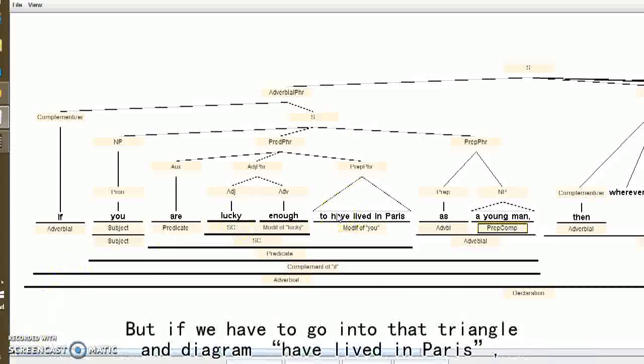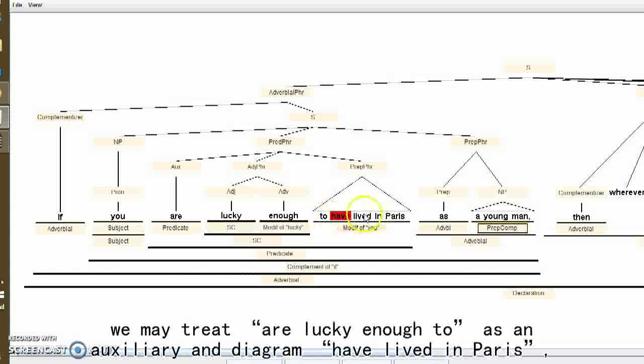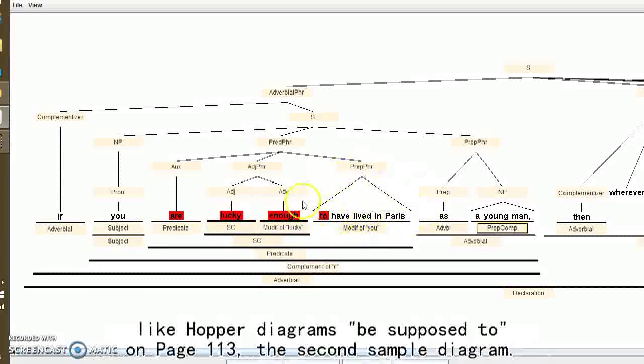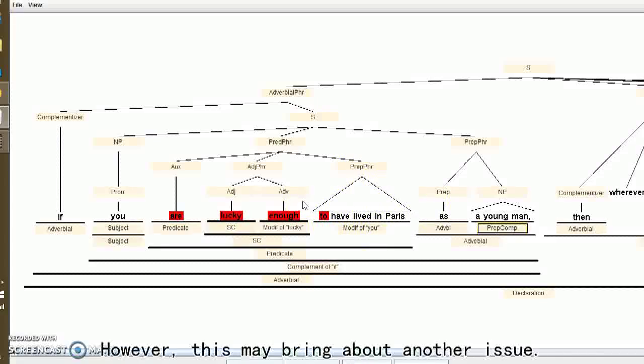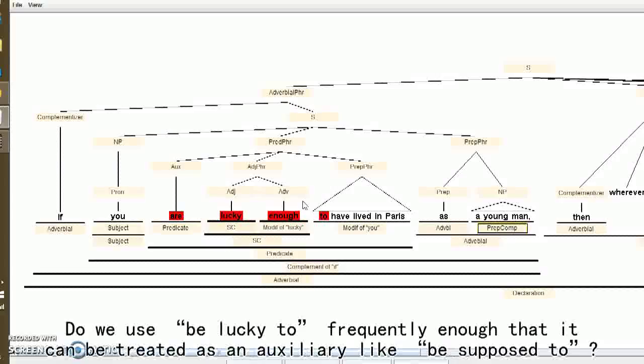But if we have to go into that triangle and diagram have lived in Paris, we might treat lucky to as an auxiliary and diagram have lived in Paris like Hopper diagrammed be supposed to be on page 113, the second sample diagram. However, this might bring about another issue. Do we use be lucky to frequently enough that it can be treated as an auxiliary like be supposed to?